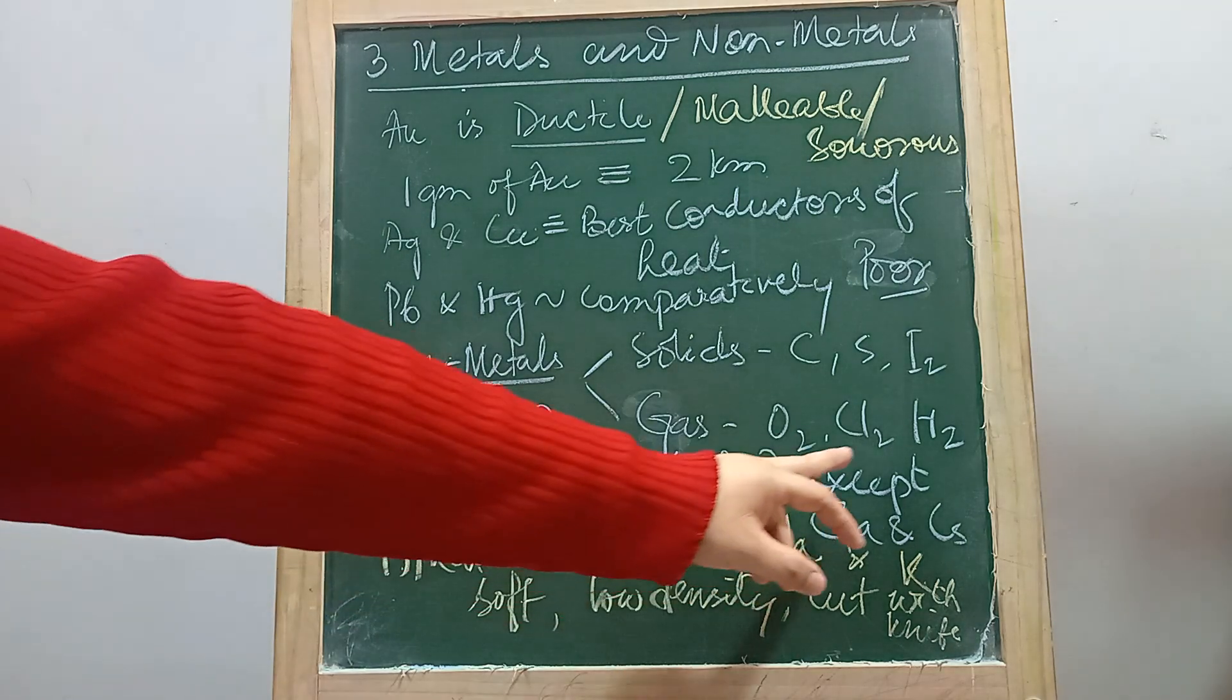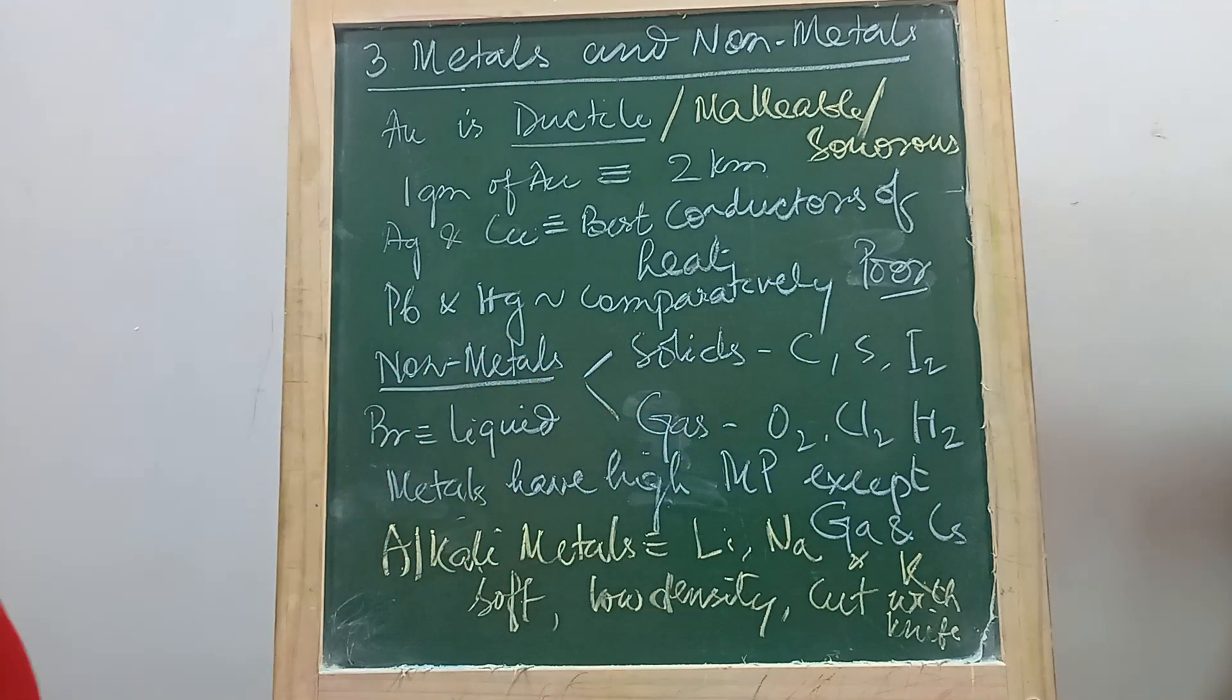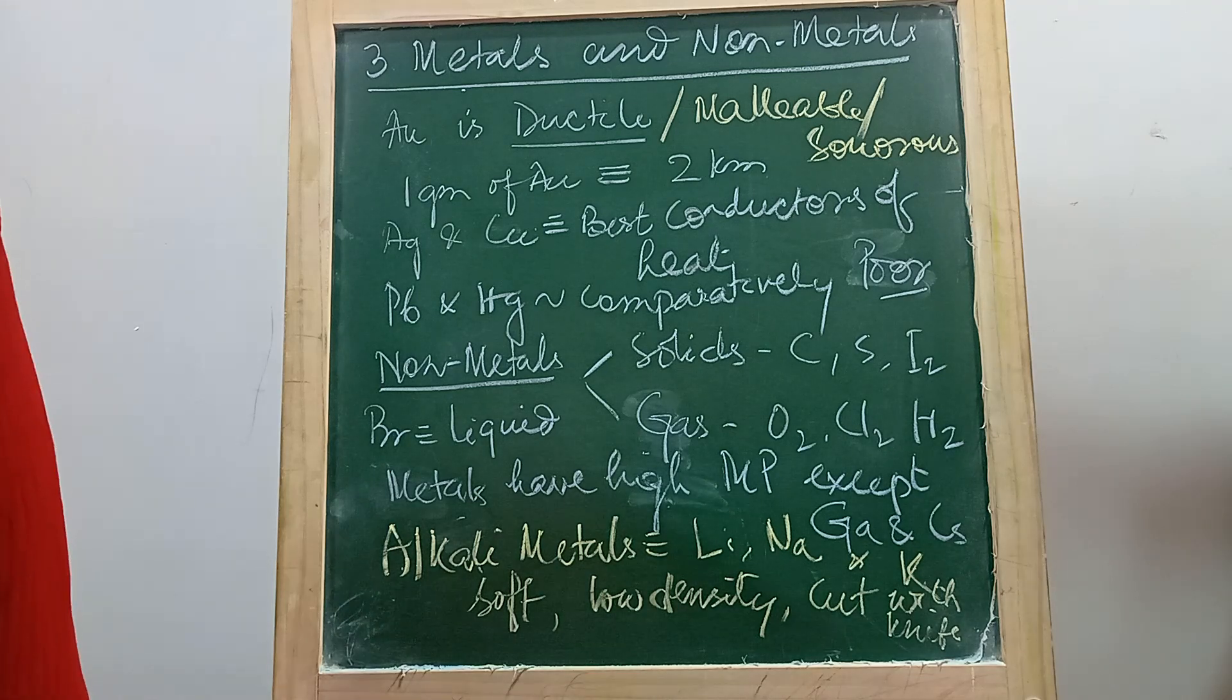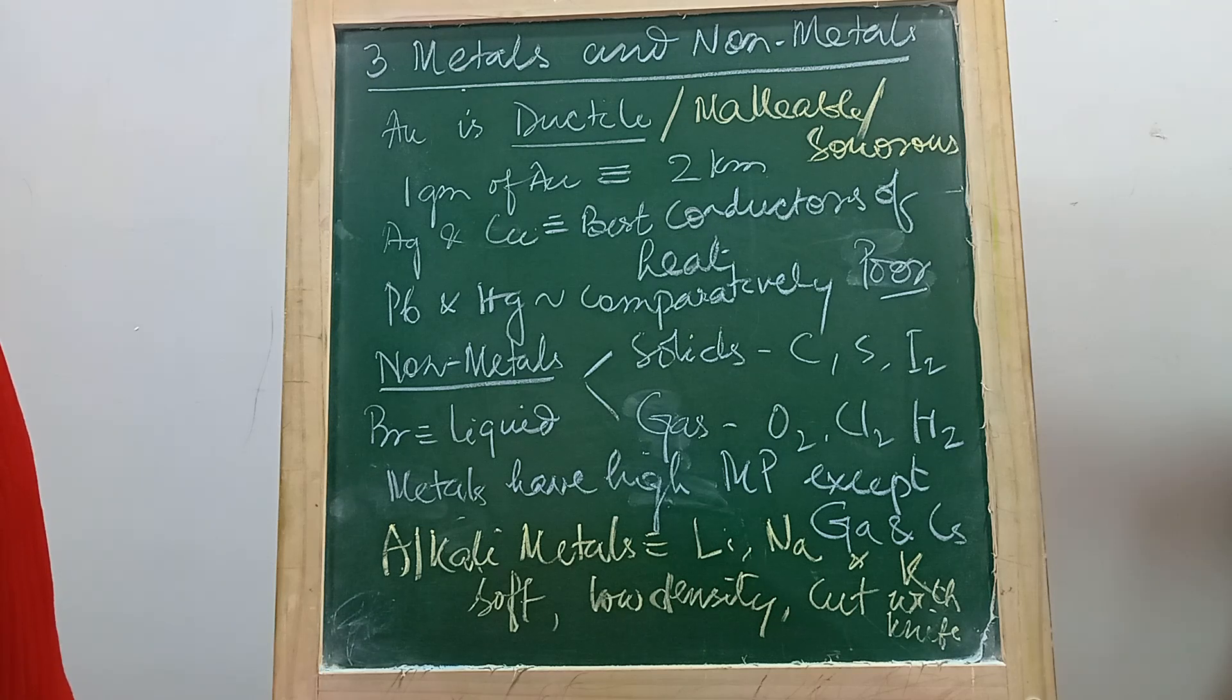Then gases: oxygen, chlorine gas, hydrogen gas. Hydrogen is the element of which the stars are made up of. The sun is one of the stars, right? And it is made up of hydrogen. It converts into helium in a fusion reaction.